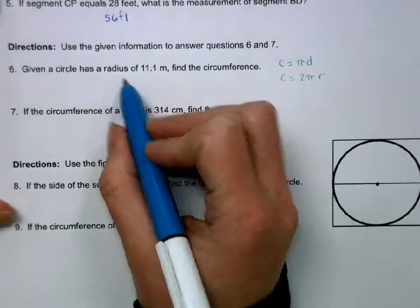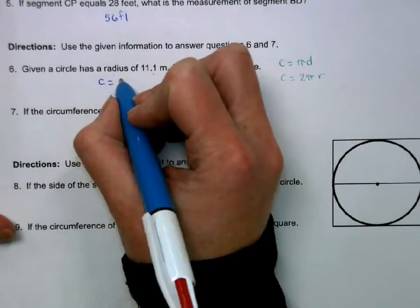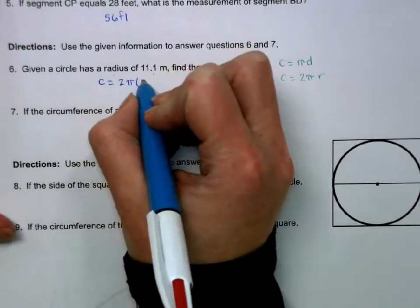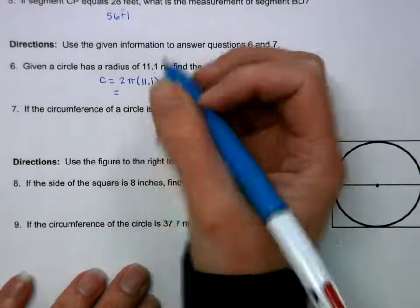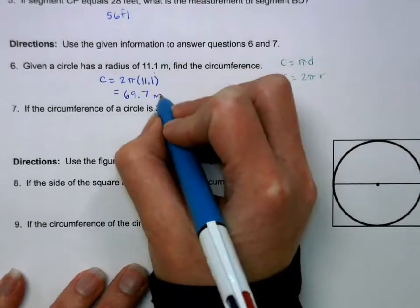So in six, we are given the radius is 11.1. So the circumference is going to be 2 pi times 11.1, which gives us 69.7 meters.